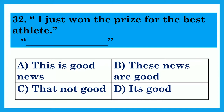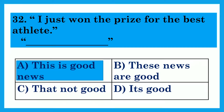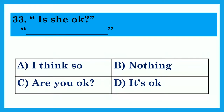I just won the prize for the best athlete. Dash. Option A: This is good news. Option B: These news are good. Option C: That's not good. Option D: It's good. The answer is Option A: This is good news. Is she okay? Dash. Option A: I think so. Option B: Nothing. Option C: Are you okay? Option D: It's okay. The answer is Option A: I think so.